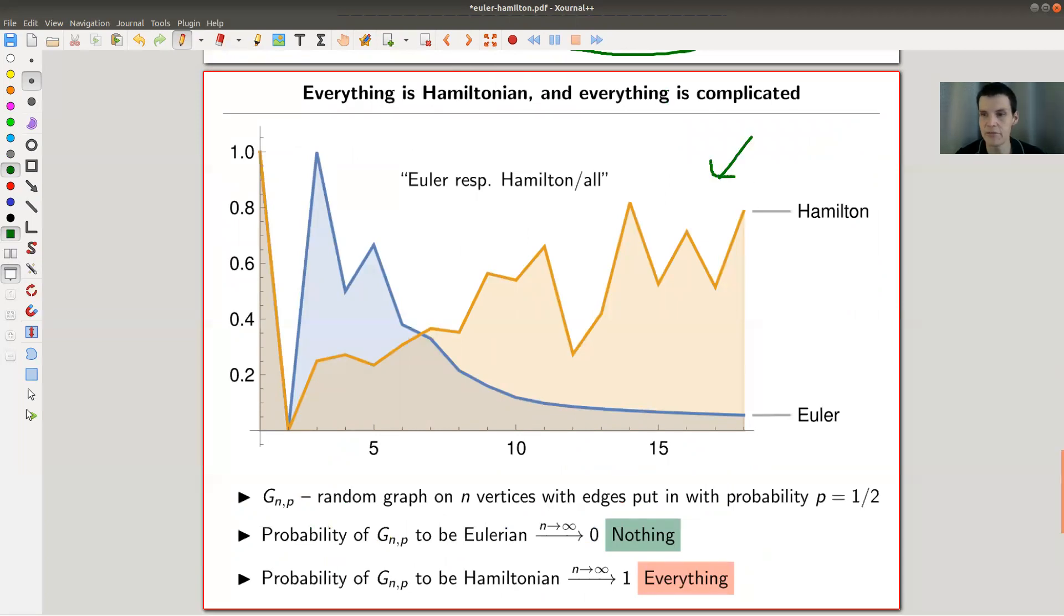In some sense, it turned out to not be really hard. I looked at the online encyclopedia of integer sequences for the number of graphs on N vertices, the number of Eulerian graphs on N vertices, and the number of Hamiltonian graphs on N vertices. This is the ratio of Eulerian respectively Hamiltonian versus all. It turns out that Hamiltonian approaches one in the long run, and Eulerian approaches zero. You can say almost all graphs are Hamiltonian, and almost no graphs are Eulerian, which is very surprising.